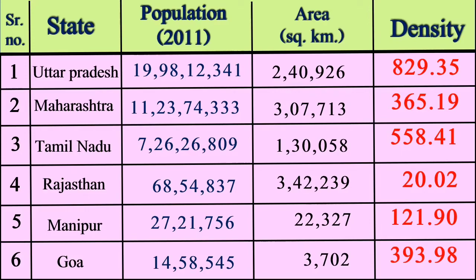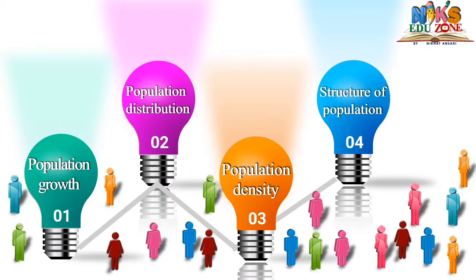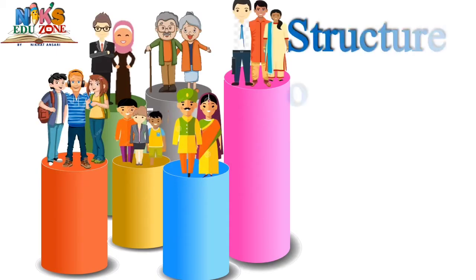Density of population is not the same everywhere. In some regions the area is small but the population is large — for example, Goa. In other regions the area is large but the population is small, so the density of population is low — for example, Rajasthan.